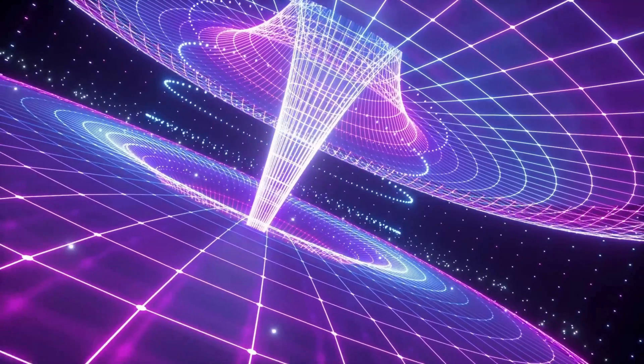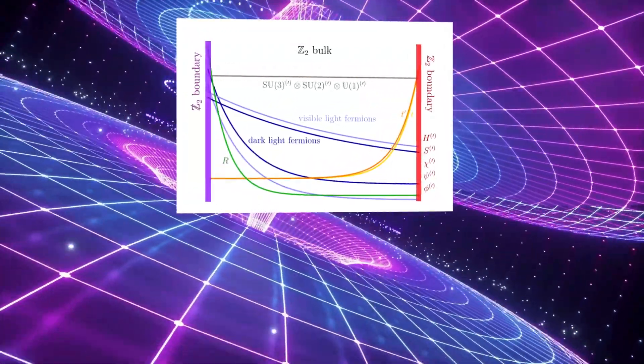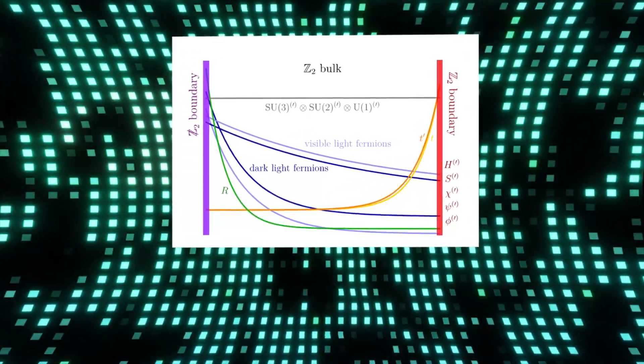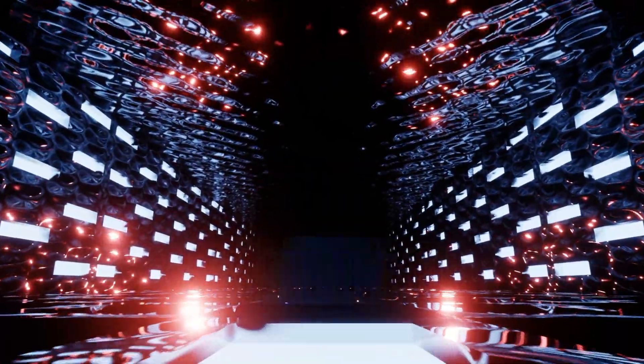The study introduces an innovative concept of approximate Z2 exchange symmetry between the regular matter sector and the parallel dark matter sector. Z2 exchange symmetry refers to a type of symmetry in physics where swapping all particles with their corresponding mirror particles in a parallel sector or system doesn't change the overall behavior or properties of the system.